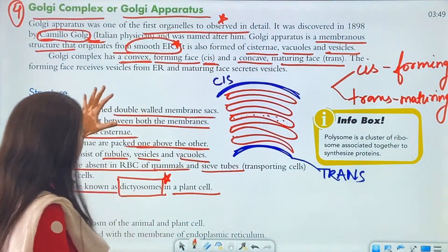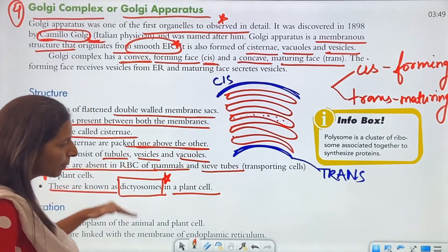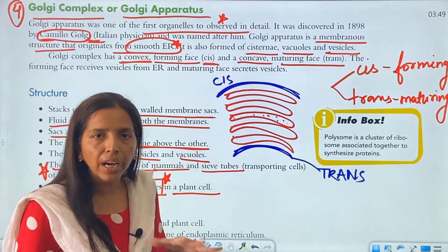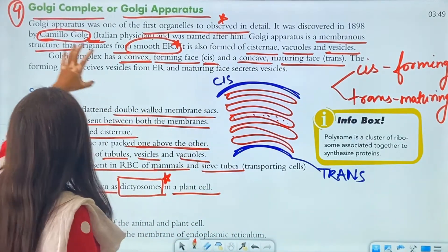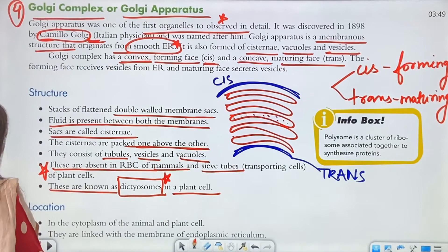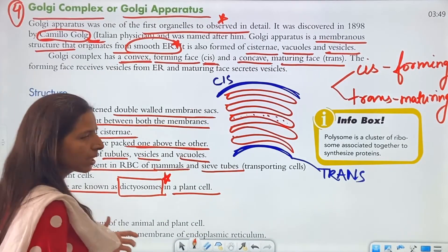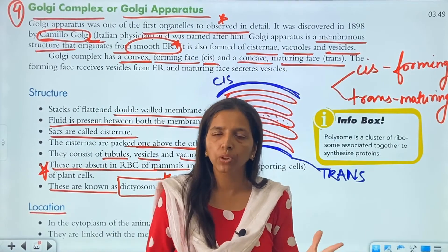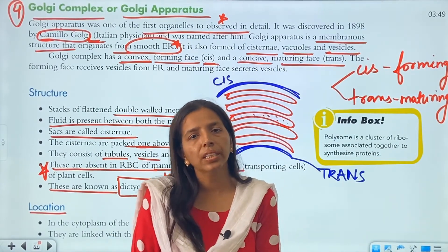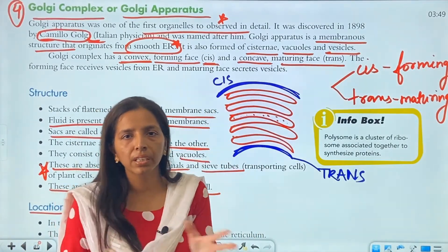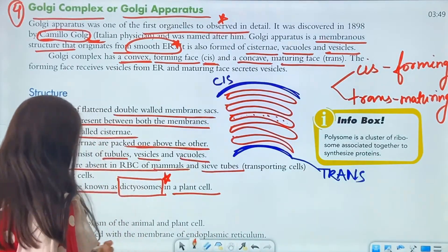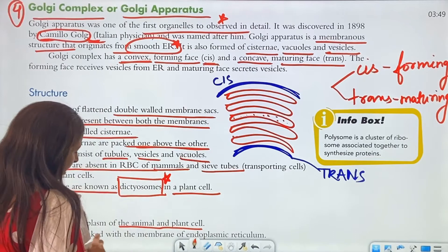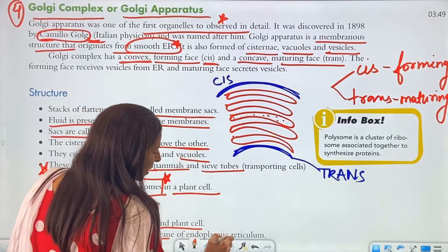In plant cells, the Golgi apparatus is known as dictyosomes. Regarding location, they are somewhat associated with the endoplasmic reticulum — located in the cytoplasm near the endoplasmic reticulum in both animal and plant cells, and linked with the membrane of the endoplasmic reticulum.